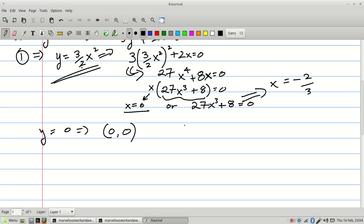Now I've got to figure out the other one. So I've got to take negative 2 thirds and plug it in there. So y equals 3 halves of negative 2 over 3 squared. And that's going to be 3 halves of 4 over 9. I can cancel a factor of 2 in the top here with a factor of 2 in the bottom, cancel a factor of 3 in the top with a factor of 3 in the bottom, and I end up getting 2 over 3. So the other point is negative 2 thirds and 2 thirds.